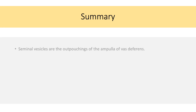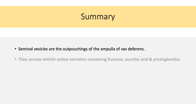Quickly recalling what we have seen so far: seminal vesicles are the outpouchings of the ampulla of the vas deferens. They secrete a whitish-yellow secretion containing fructose, ascorbic acid, and prostaglandins.